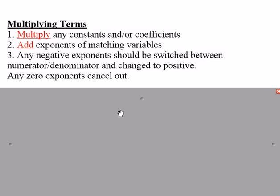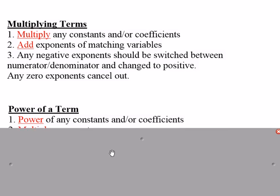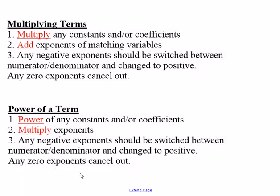If you're going to take a power of a term, you take the power of any constants or coefficients, and then you multiply the exponents. And again, don't leave any negative powers or zero powers. Those have to be simplified at the end.